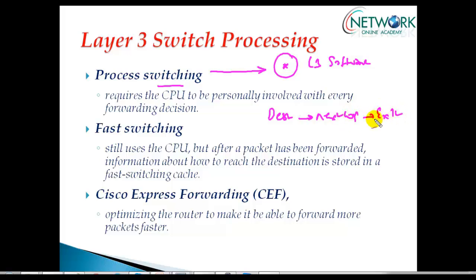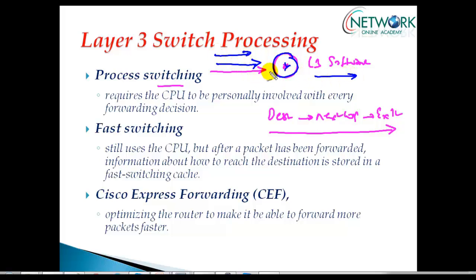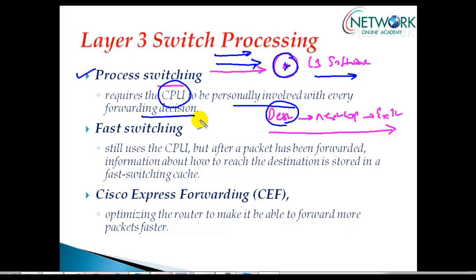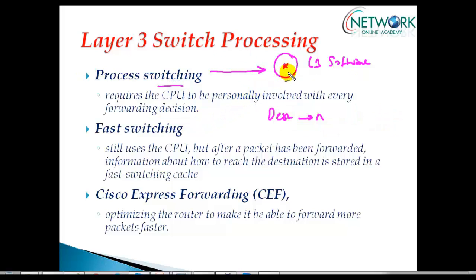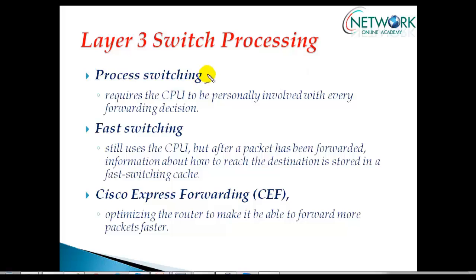After finding the next-hop IP address, the router determines the exit interface and forwards the packet. If another packet arrives for the same destination, the same process happens again. Every time any packet comes, even for the same destination, it still performs the lookup. Process switching requires the router CPU to be personally involved in each and every forwarding decision for each packet.